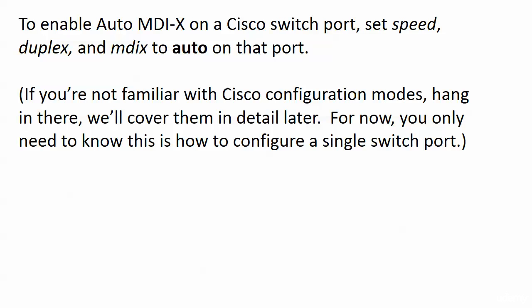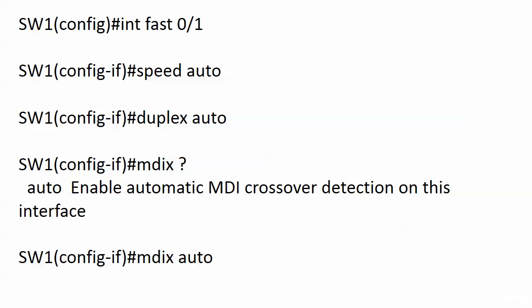If you're not familiar with Cisco config modes, hang in there, because we're going to cover them in detail later. We're going to be on live Cisco routers and switches, but I just want to show you this one on the board, because it's how to configure a single switch port. And here it's fast ethernet 0/1, one particular port, or port 1 if you want to call it that, like I usually do. And I've set speed, duplex, and MDIX to Auto. And that's what you have to do. It's just that simple.